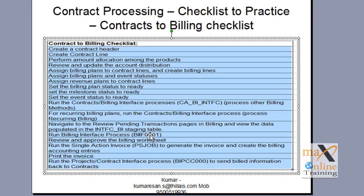So this is the billing interface process that created temporary billing. We looked at the worksheet on the billing model and approved it. Once you approved it, then you ran the single action invoice that generated the invoice. We looked at the invoice, printed the invoice — meaning we looked at the PDF — and then ran the project contract interface process to send the billed information back to contracts.